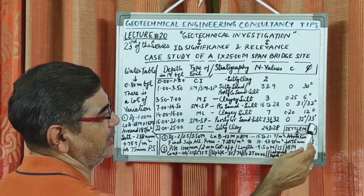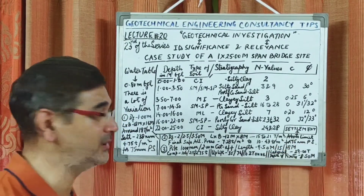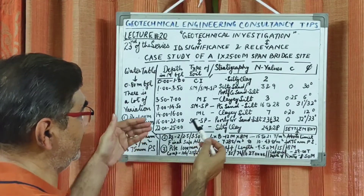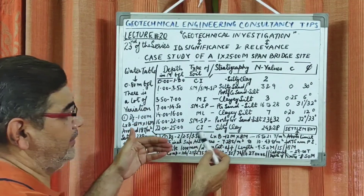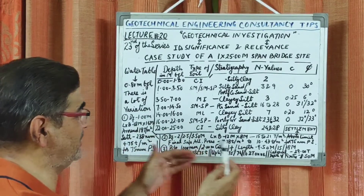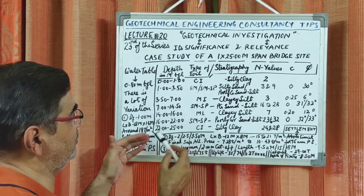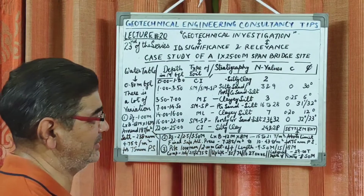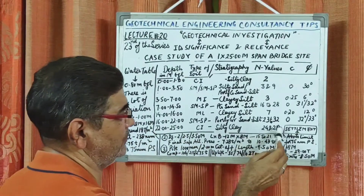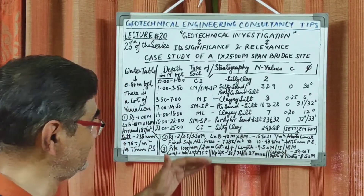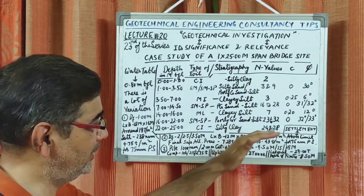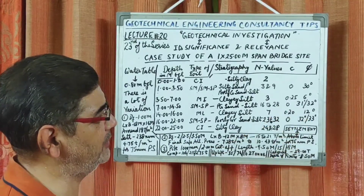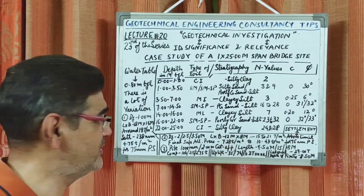Then sandy to silty, medium plasticity and compressibility CI group of soil was encountered from 22 meter to 25 meter, with N values ranging from 24 to 28. We did not go further for cohesion and angle of internal friction testing at this depth, since we needed to determine the kind of foundation required and its influence on the structure at these levels.